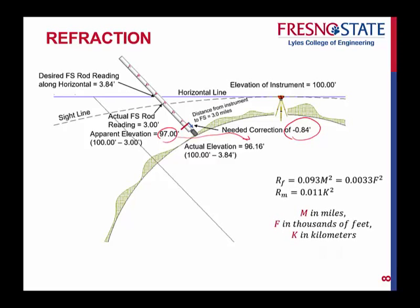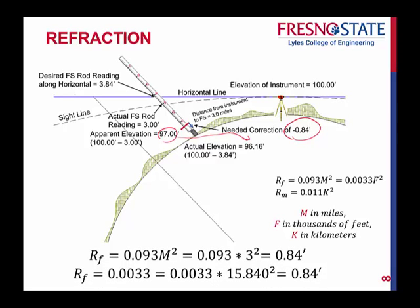I've got equations for refraction correction. R_F and R_M stand for the correction for refraction — F for feet, M for meters. M, F, and K correspond to miles, thousands of feet, and kilometers. Going through the calculations for three miles, whether using miles or thousands of feet, the answer comes out to 0.84 on both. The correction is minus 0.84 because, due to refraction, you calculate things to be apparently higher than what they really are. The equation gives you the absolute value, and then you apply the proper sign.